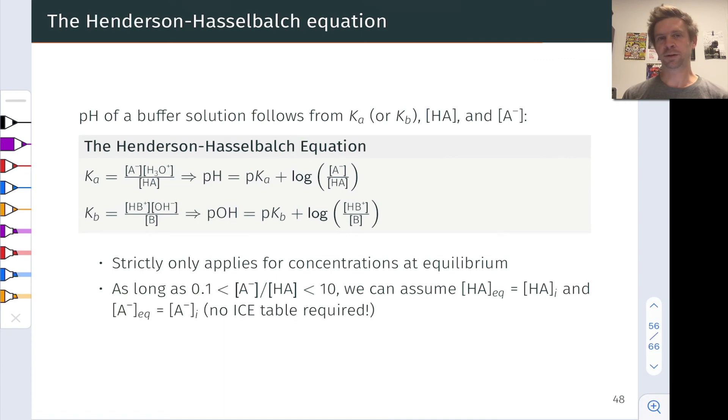So what the Henderson-Hasselbalch equation allows us to do is calculate the pH of a buffer solution, which is essentially the equilibrium concentration of H3O+ from Ka for the conjugate acid, or Kb for the base in the pair, the acid concentration, and the conjugate base concentration, HA and A- molarities. And we've seen the acidic form of this equation with Ka.